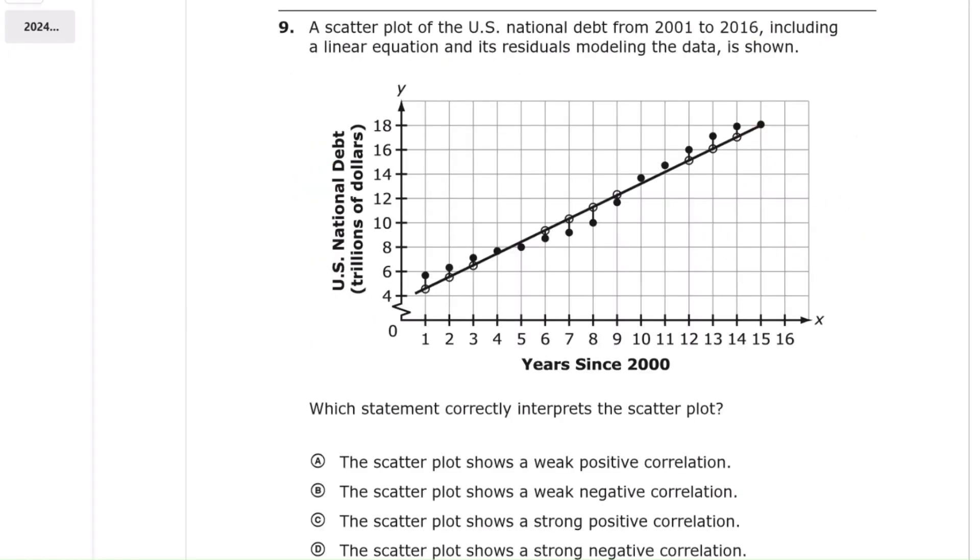Question 9, the scatter plot shows the United States national debt from 2001 to 2016. The data points rise steadily and closely follow the line of best fit. This shows a strong positive correlation between years and debt. Answer, choice C. Strong positive correlation.